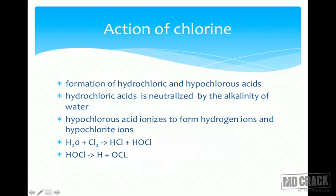Action of chlorine: chlorine forms hydrochloric acid (HCl) and hypochlorous acid (HOCl). Hydrochloric acid neutralizes the alkalinity of the water — this is important because chlorine does not work if the water is alkaline; the pH of the water must be close to 7. So the HCl that forms reduces the alkalinity and thus itself helps in chlorination.